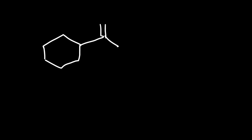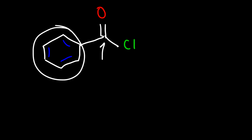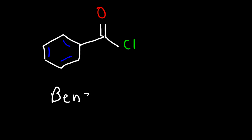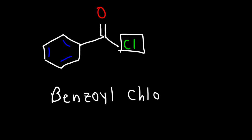Now what about this one? Go ahead and name this molecule. We have another acid chloride but attached to a benzene ring. Whenever you have a benzene group plus a carbonyl carbon, instead of benzene this is going to be called benzoyl, because we have an acid halide attached to it. With the chlorine atom at the end, this is simply benzoyl chloride.